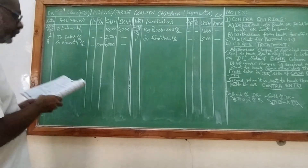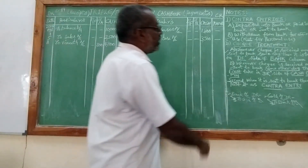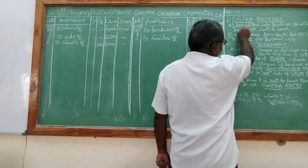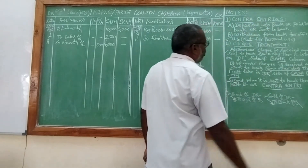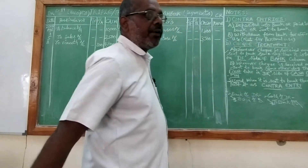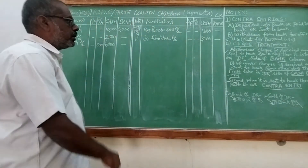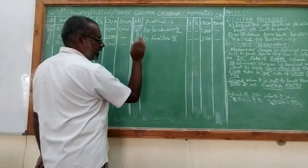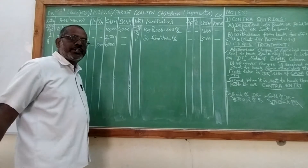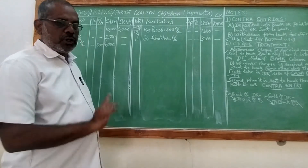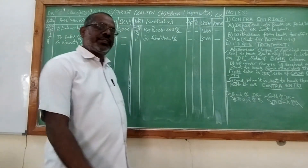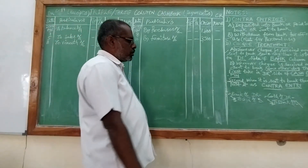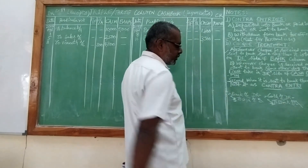November 15th: deposit in the bank. If you see my notes, number 1 — contra entries: deposit in the bank, pay into the bank, or sent to bank is a contra entry. A contra entry comes twice in the three column cashbook — once on the debit side and once on the credit side. Most students make mistakes while posting this, so my simple method is to make a journal entry of it.